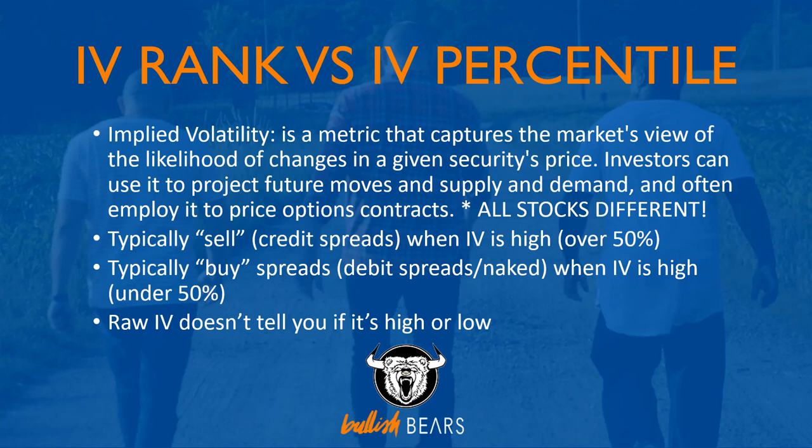Implied volatility, this is a definition through Investopedia: it's a metric that captures the market's view of the likelihood of changes in a given security's price. Investors can use it to project future moves in supply and demand and often employ it to price options contracts. Simplified: it's the volatility overall within the options contract. If a stock has high volatility, it's going to be more susceptible to bigger price moves.